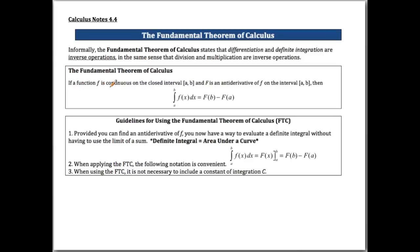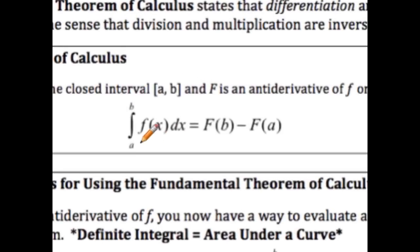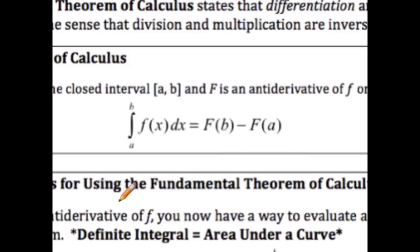All that work with sums and finding the limit of sums takes a lot of effort, but the fundamental theorem of calculus is so simple — it's just a beautiful thing. It says: if a function f is continuous on the closed interval from a to b, and capital F is an antiderivative of f on [a, b], then the definite integral from a to b of f(x) dx equals the antiderivative F evaluated at b minus F evaluated at a. So all we have to do is find the antiderivative, plug in b, plug in a, and subtract the two.